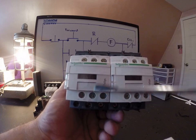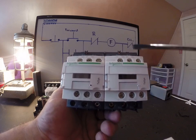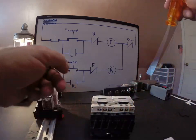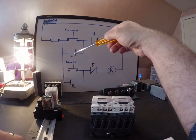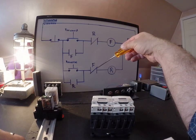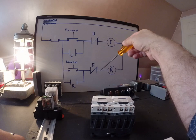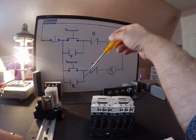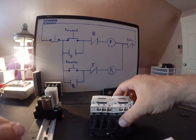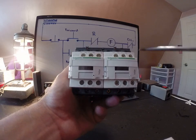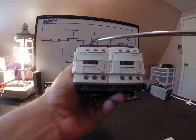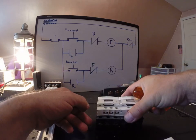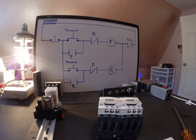We also have normally closed contacts and normally open contacts on both coils. So, I've got a set of normally open and a set of normally closed, a set of normally open and a set of normally closed on the reverse. So, let's take a look at our circuit again. I need a set of normally open and a set of normally closed on the forward contactor, which I have, and I also need a set of normally closed and normally open on the reverse contactor. So, you might be able to tell already that the normally open is providing the holding circuit, and the normally closed is providing the interlock circuit between the contactor of one and the contactor of another.